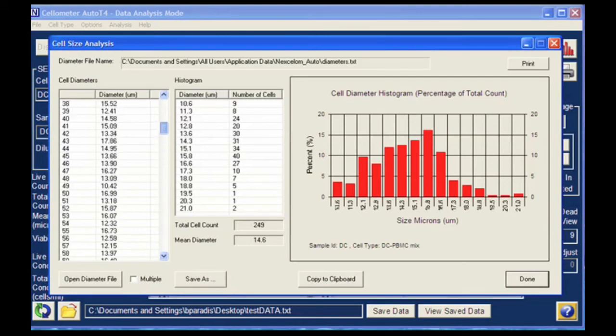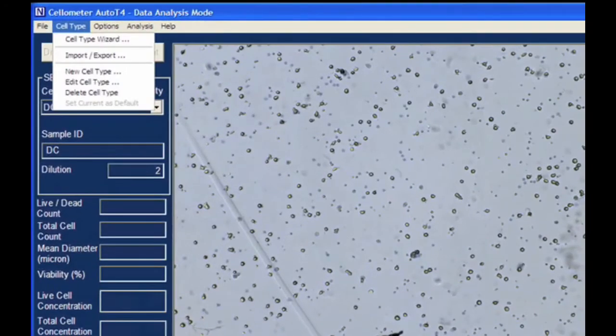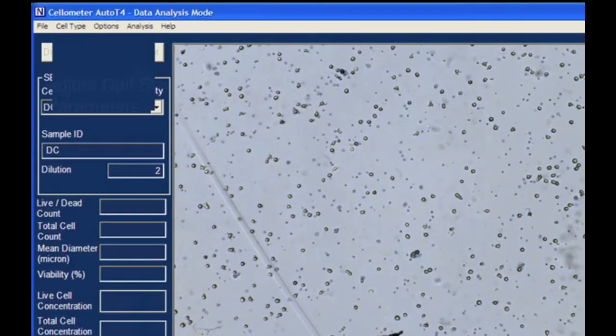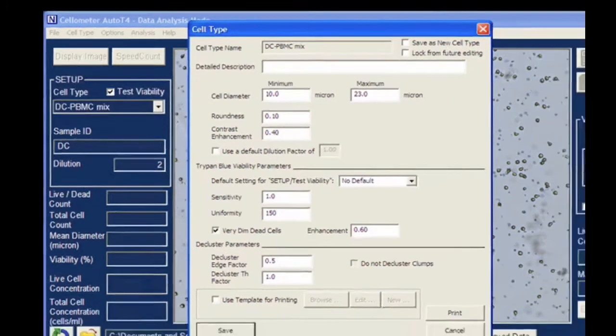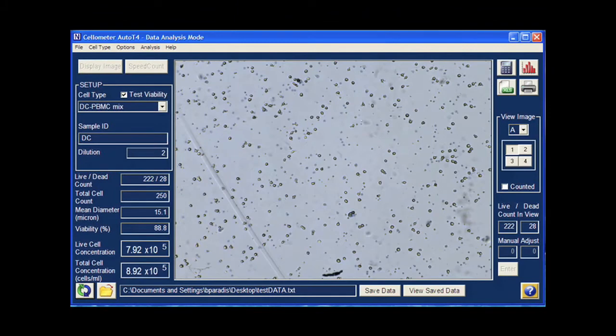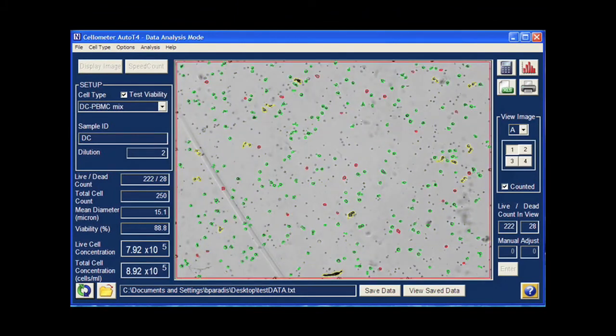The minimum and maximum cell size in the Cell Type Editor can be adjusted to obtain concentration and viability calculations for a specific cell size population. This image demonstrates counting of mature dendritic cells from cultured PBMCs.